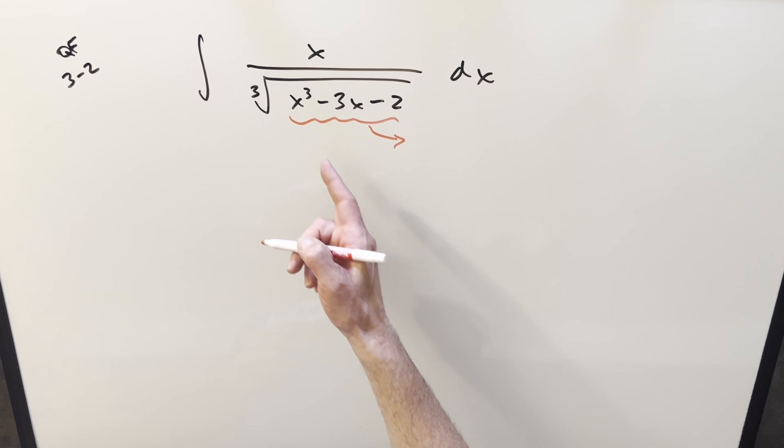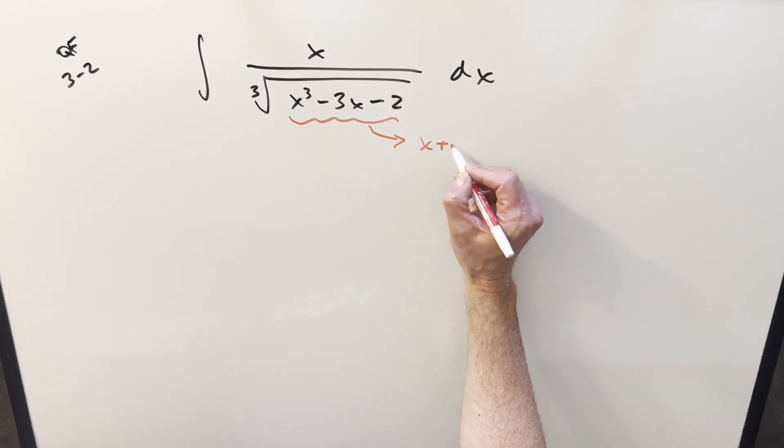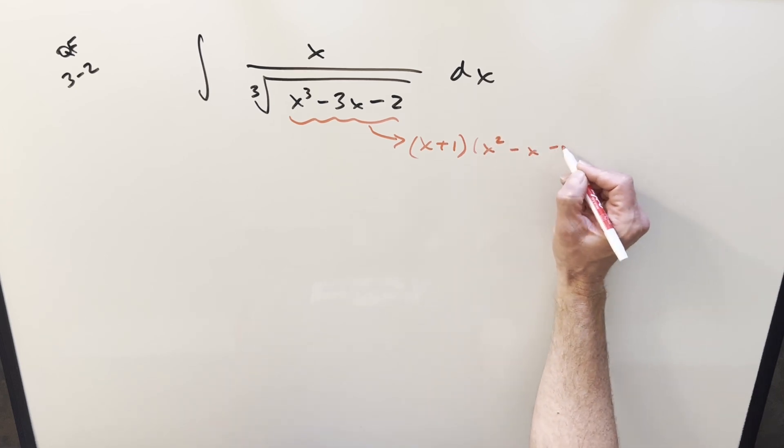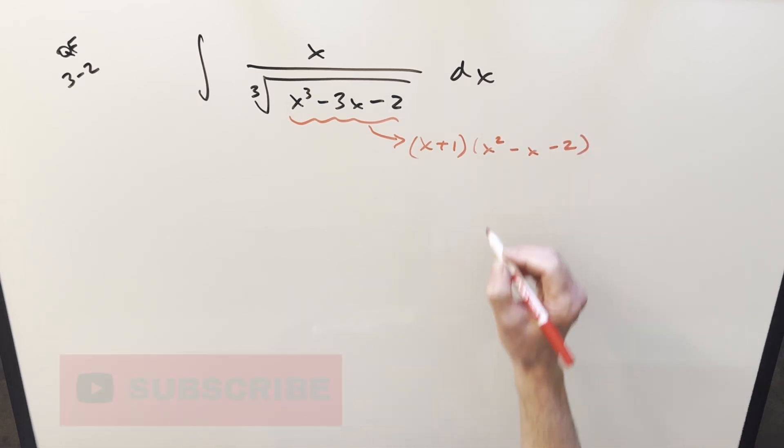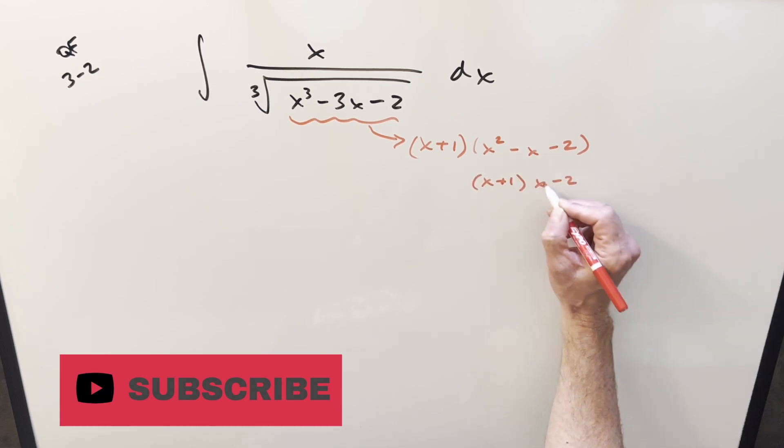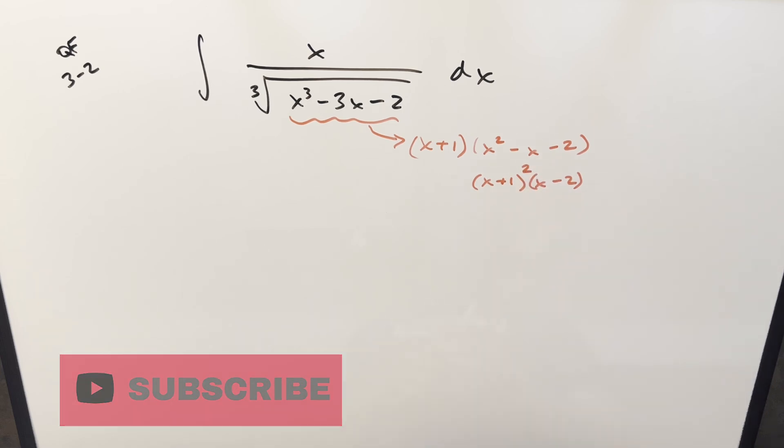The good thing is you'll notice that minus 1 is going to be a factor. You just plug in minus 1. And so that's going to give us a starting point of writing it. If minus 1 is a factor, we can factor it like x plus 1. And then the rest of it is going to be x squared minus x minus 2. But then this can be factored here as x plus 1 times x minus 2. And combining it with this, what we have is x plus 1 squared.